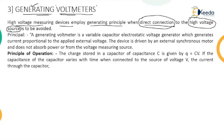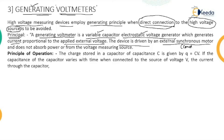The generating voltmeter is a variable capacitor and an electrostatic voltage generator. Static electrical energy is generated, producing a current that is proportional to the applied external voltage. The device is driven by an external synchronous motor — a constant speed motor — which drives the variable capacitor to enable measurement.